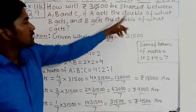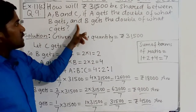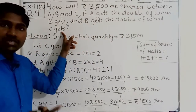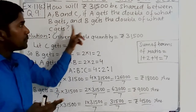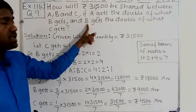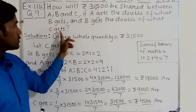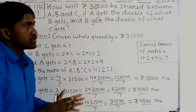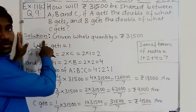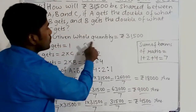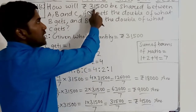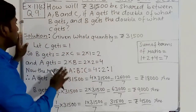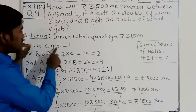A gets the double of what B gets, and B gets the double of what C gets. So see here how you can solve this question. In the solution, the given whole quantity is the amount 31,500 rupees.